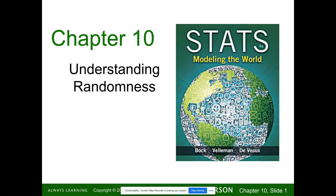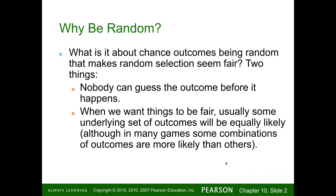We're going to talk about randomness. What is it about chance outcomes being random that makes random selection seem fair? There are two things: nobody can guess the outcome before it happens, and when we want things to be fair, usually there's some underlying set of outcomes that will be equally likely.